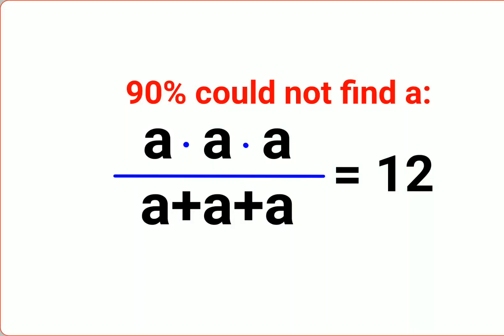Welcome everyone. So today we are going to solve a very nice indices problem where we have a into a into a upon a plus a plus a equals to 12. Now see, understand when you have the same base and different indices or same indices, you can directly write this as what a raised to m plus n.